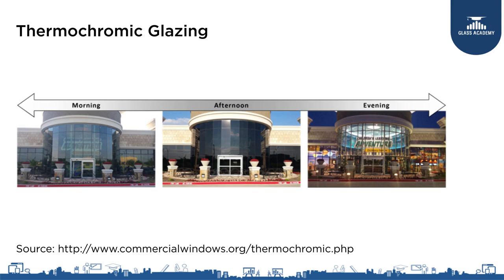Both these glasses are great, but we want something beyond them. We do not want the glass to change its properties on its own — we would like to control it because there are various reasons why we want to control the transmittivity of the glass. Imagine if you are using a thermochromic glazing and at night you want to reduce the visible transmittance — you cannot do it because the glass has become clear due to temperature. Similarly, with a photochromic glass you cannot make it dark at night. So, we want a glass where we can control the transmittivity as per our liking.